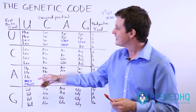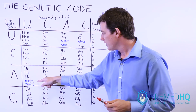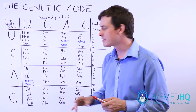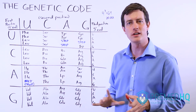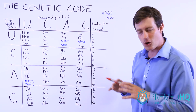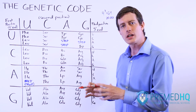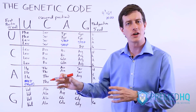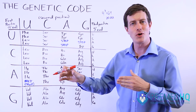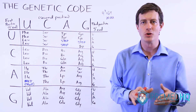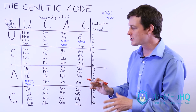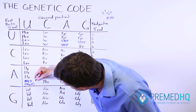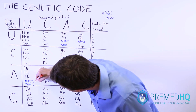One important codon is AUG, which codes for methionine — this is the start codon. It is always the starting point where the ribosome begins to translate your mRNA into a protein. It will always start with methionine, and that will be AUG.